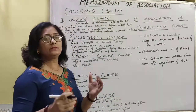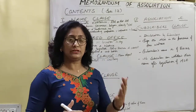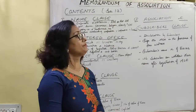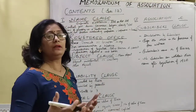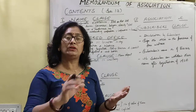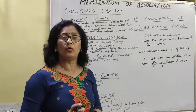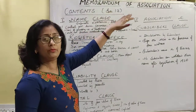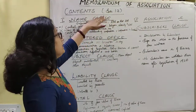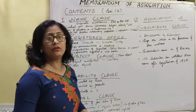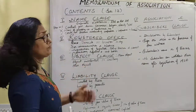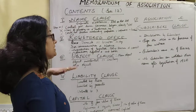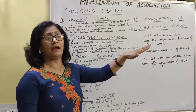It is a document which is essential in case of a public company for registration. It requires a document, a major content that is followed by every company. The content of Memorandum of Association is mentioned in Section 13 of Schedule 1 of the Companies Act. The contents are divided into 6 parts.